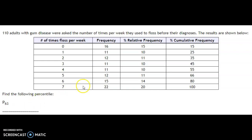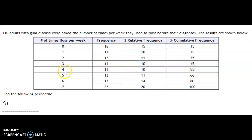There are other types of questions where if I said P55, notice that 55 is exactly where one class ends. When you're in the situation where the percentile lands exactly on a boundary, you split it between this class and the next one. So you go halfway between four and five, meaning P55 equals 4.5.